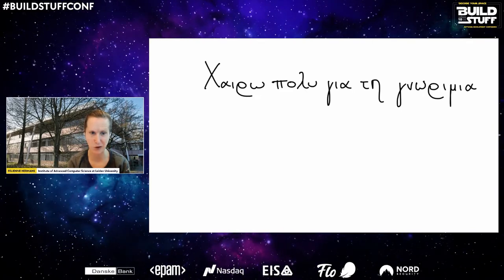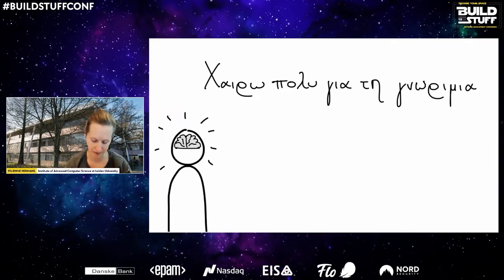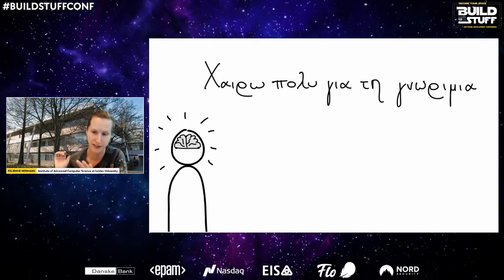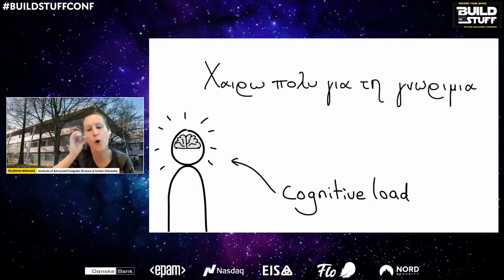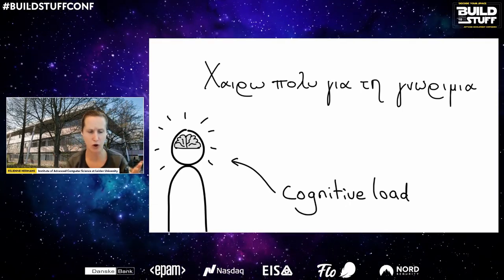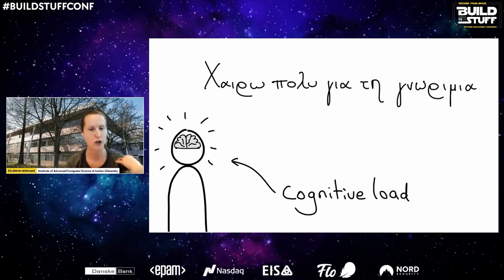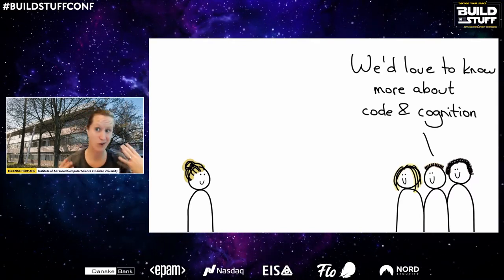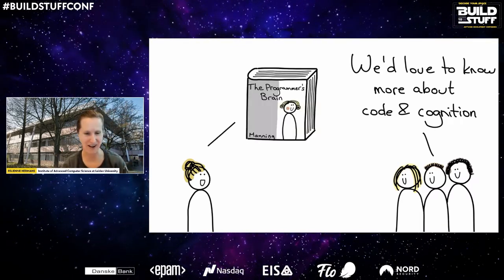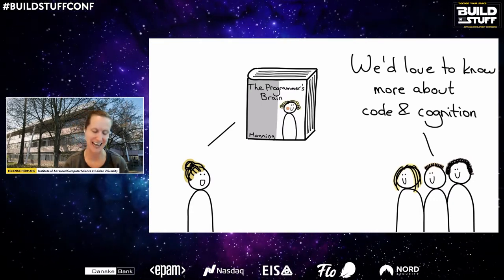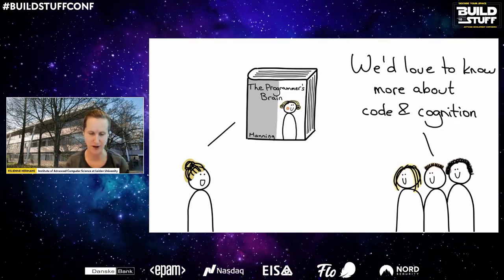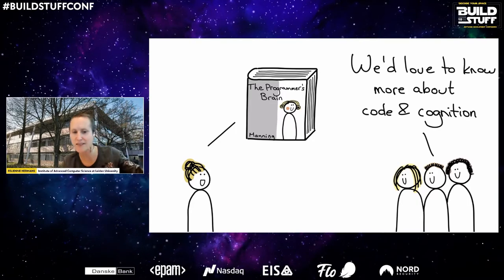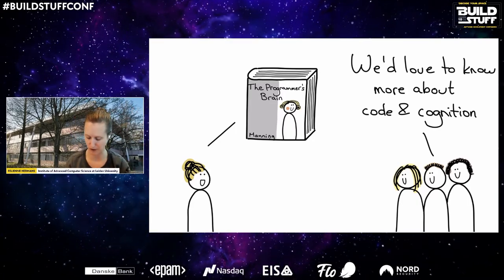This principle has a name: it's called cognitive load. If your brain is very focused on little details, it's very hard to process information because there's just too much going on. If you want to know more about programming and cognition and how your brain processes everything, I wrote a book about this called The Programmer's Brain. At the end of my talk I have a link to the website where you can buy the book, because I really started to dive into this idea of how do people learn anything.